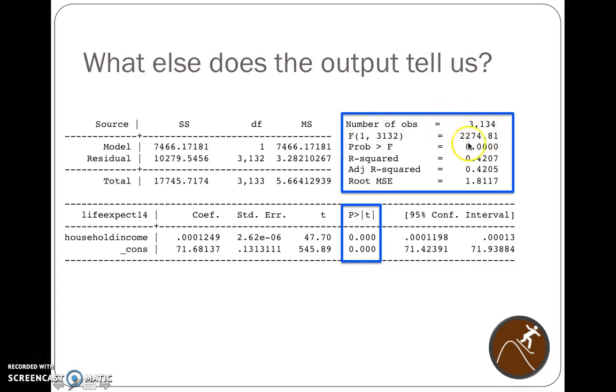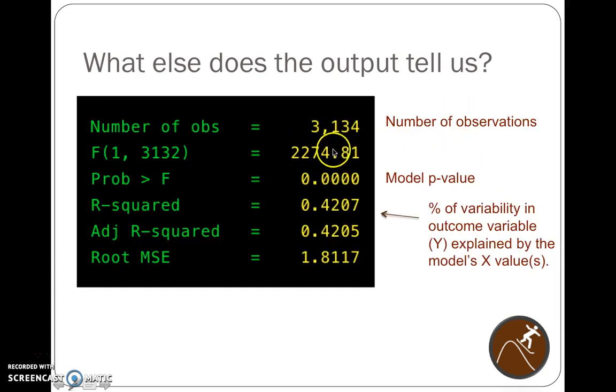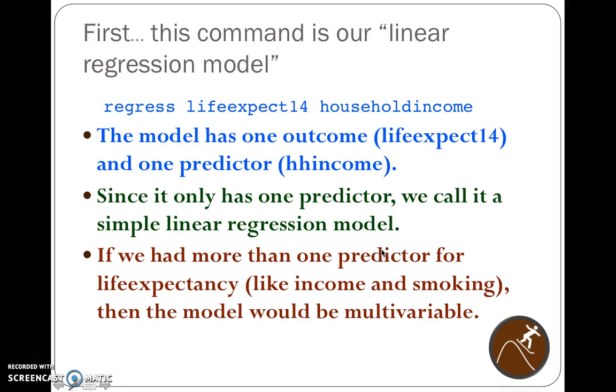So this number, this box here, we're going to have it right here. We're going to talk about this more in the next video, but it tells us the number of observations. It tells us the equation of our line is statistically better than not having it at all. So just trying to maybe guess life expectancy at the average in the United States. Having that information about household income is important and it adds value. It's statistically better than not knowing the income if you're trying to guess life expectancy. We have this R-squared value and then this adjusted R-squared value. I'll talk more about the difference between these, but in general, just a quick easy way of saying this: the R-squared value says that 42% of the variability in life expectancy, the outcome, is explained by our model. So we're going to continue this in our next video.